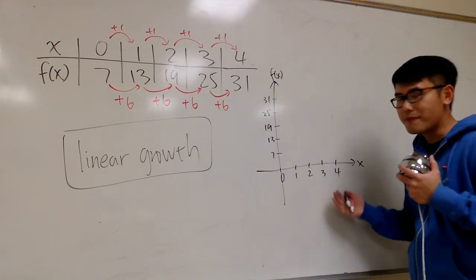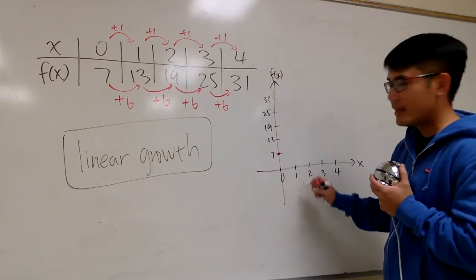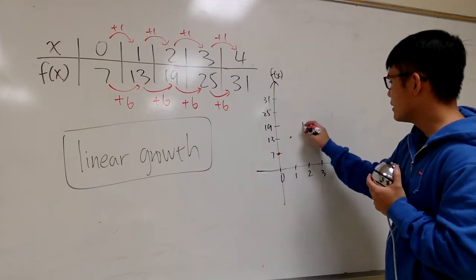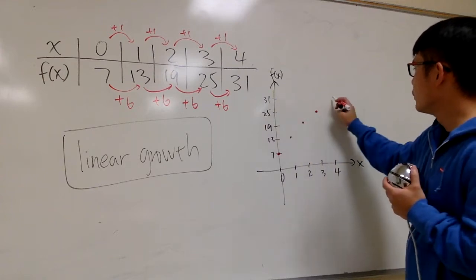Not drawn to scale, okay? So 0, 7 is right here, and then 1, 13 is right here, 2, 19 is right here, and then 3, 25 is right here, 4, 31 is right here.